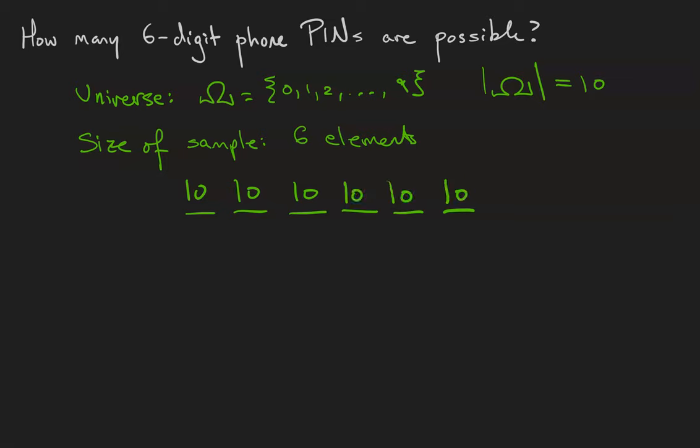And remember from the last video that the multiplication principle says that when we must choose a first digit and a second digit and a third digit and so on, multiplication is the correct way to combine those numbers. Therefore the total number of possible pins is 10 to the sixth power.